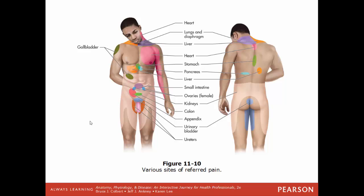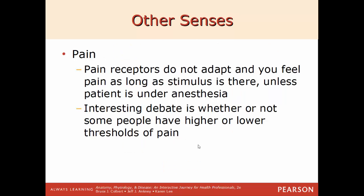Common sites of referred pain: heart pain may radiate down the left shoulder and forearm; gallbladder or liver pain may be felt in the right shoulder and right side of the neck; pancreas and stomach pain is felt in the middle just below the chest. Pain receptors do not adapt — the pain is felt as long as the stimulus is there. The only way to not feel it is under anesthetic. There is debate on whether people have a higher or lower pain threshold — they may simply have more or fewer pain receptors.